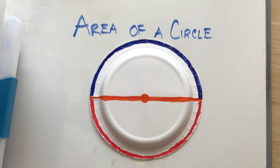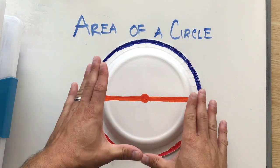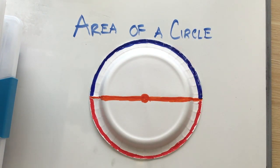Starting in third grade, we learned that the area of a rectangle is length times width. Well, how do I measure something that takes up space that doesn't have a length and a width? Well, here's how.